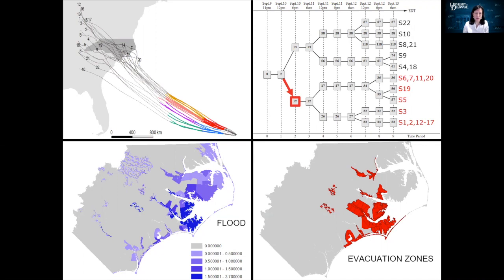In addition, the tool generates an evacuation plan for each bundle of scenarios and organizes them into a tree shown in the upper right frame. Clicking on the red bundle of tracks corresponds to the red branch of the tree. Each branch of the tree also has associated maps showing the expected flooding and wind speeds and evacuation orders recommended for that time period.